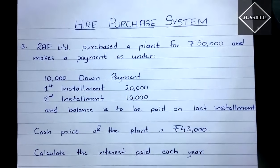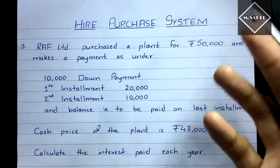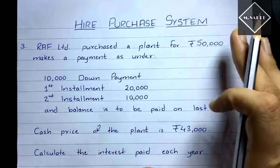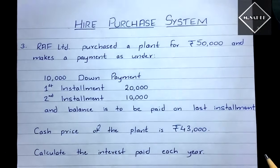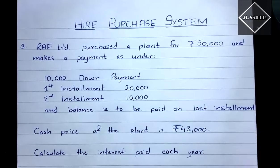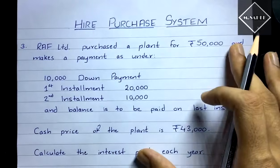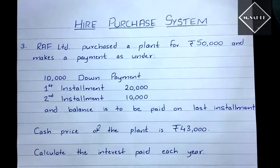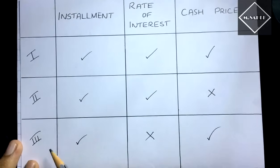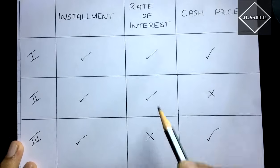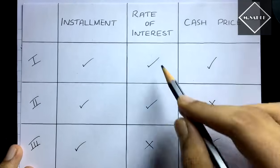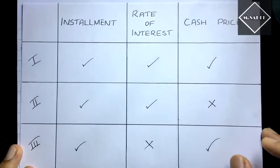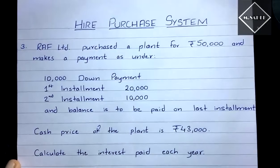Hi everyone, this is the fifth video of the Hire Purchase System. In the previous four videos we have seen the concept, the journal entries, and solved two problems based on the first and second scenarios. In this video we are going to solve a problem based on the third scenario — when the rate of interest is not given.